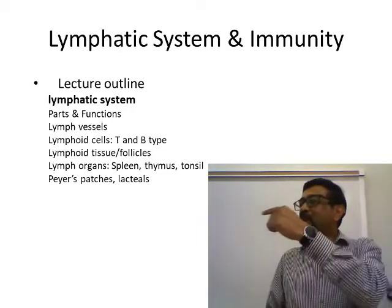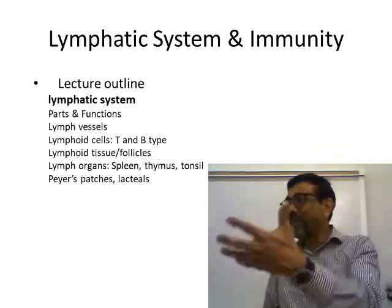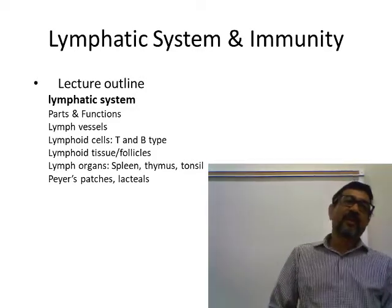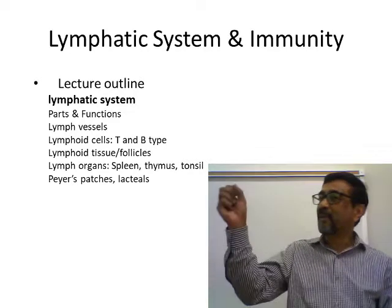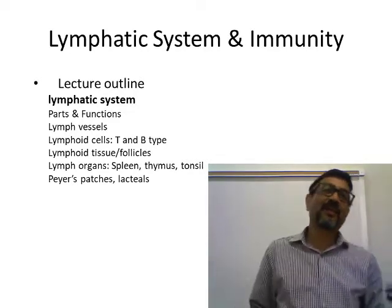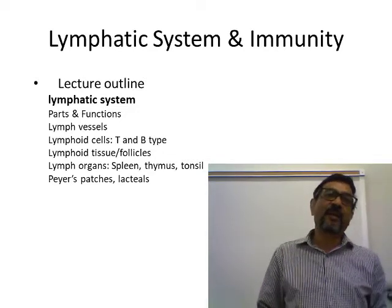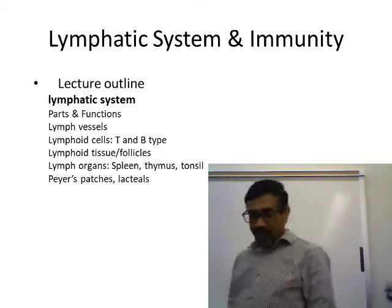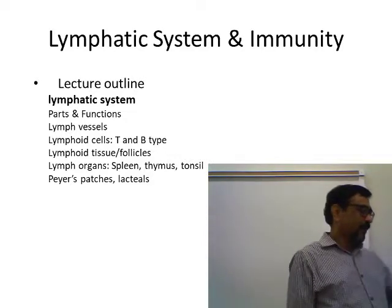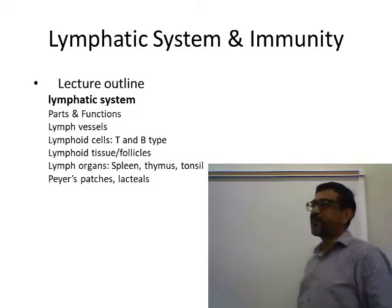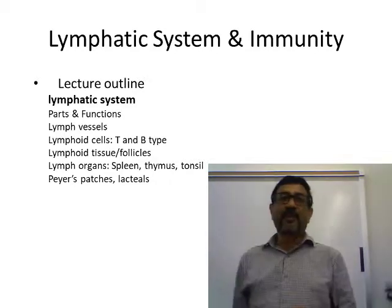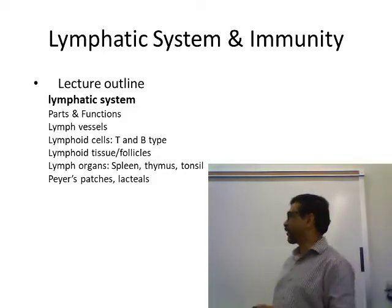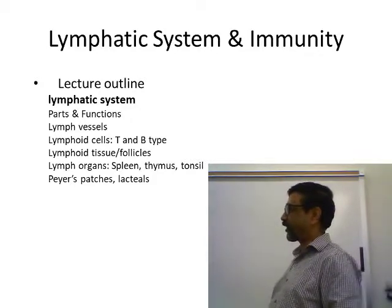The lymphatic system is also a circulatory system. You know the cardiovascular system is the main circulatory system in your body, but the lymphatic system is also a circulatory system because lymph is the fluid that circulates inside it. That's why this system has vessels called the lymphatic vessels or lymph vessels. The cells that fight against antigens are T and B cells, or T lymphocytes and B lymphocytes.